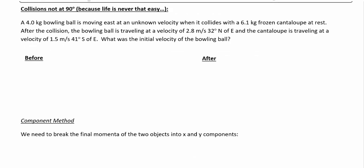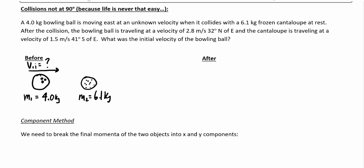In this example, we've got a bowling ball traveling to the east — let's call this V1 initial — with a mass of 4 kilograms. It collides with a stationary frozen cantaloupe, M2 equals 6.1 kilograms. After the collision, like in a game of pool, the bowling ball heads off at an angle of 32 degrees north of east, and the cantaloupe heads off at 41 degrees south of east.